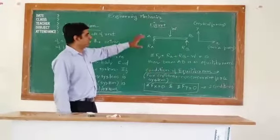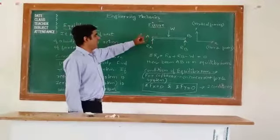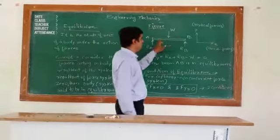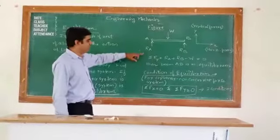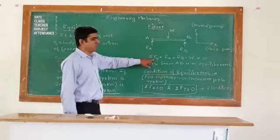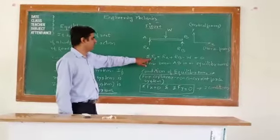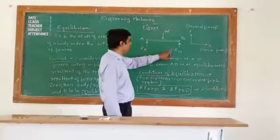Now to study the concept of equilibrium, we will add all the forces acting on this beam AB. Since all the forces are acting in the y direction, we are going to take summation of all forces in the y direction. That is RA, RB and W.